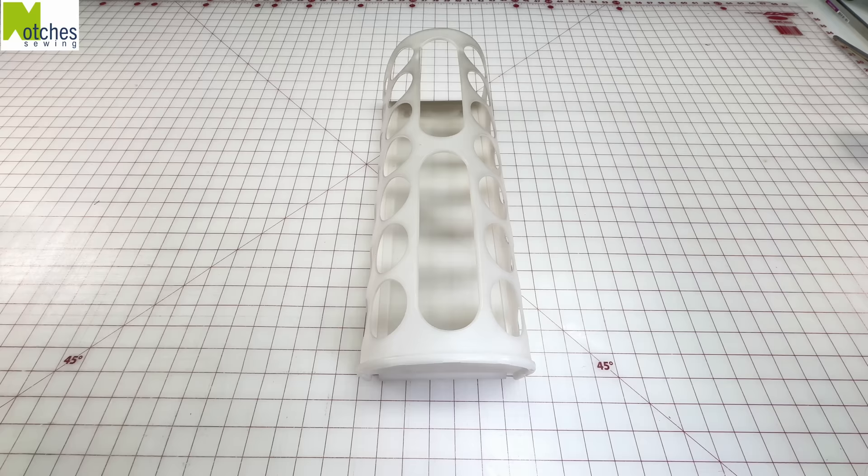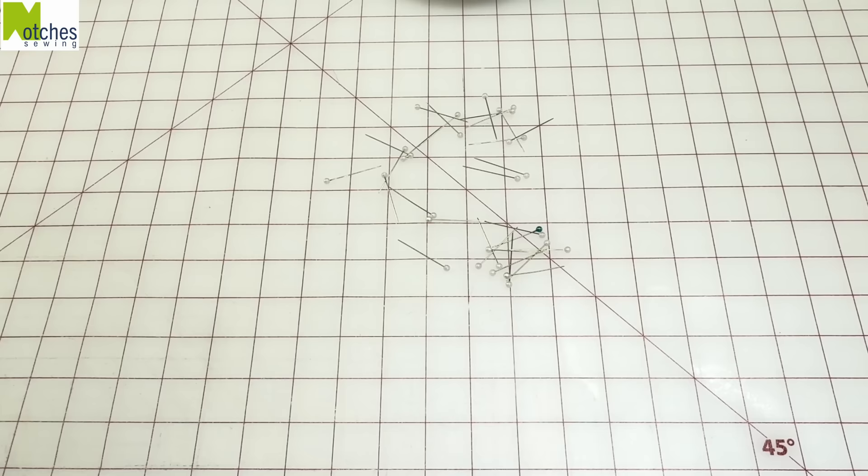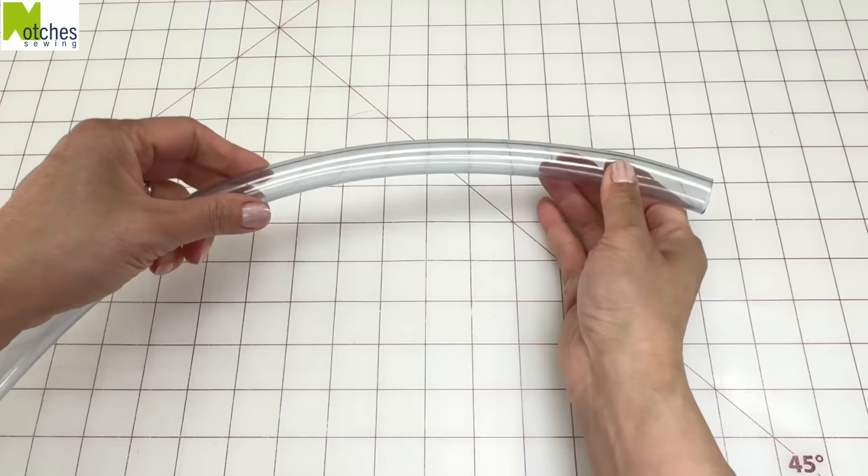If you no longer use your IKEA plastic bag dispenser, you can use it to store your vinyl rolls either in the center or across the openings. This is a telescopic magnetic pickup tool. Use it when you don't want to bend down to pick up those pins before you vacuum.